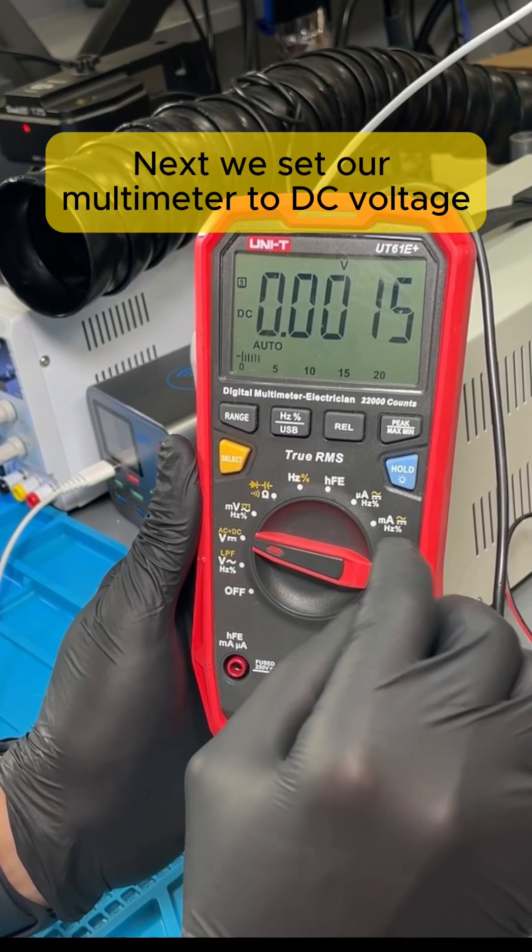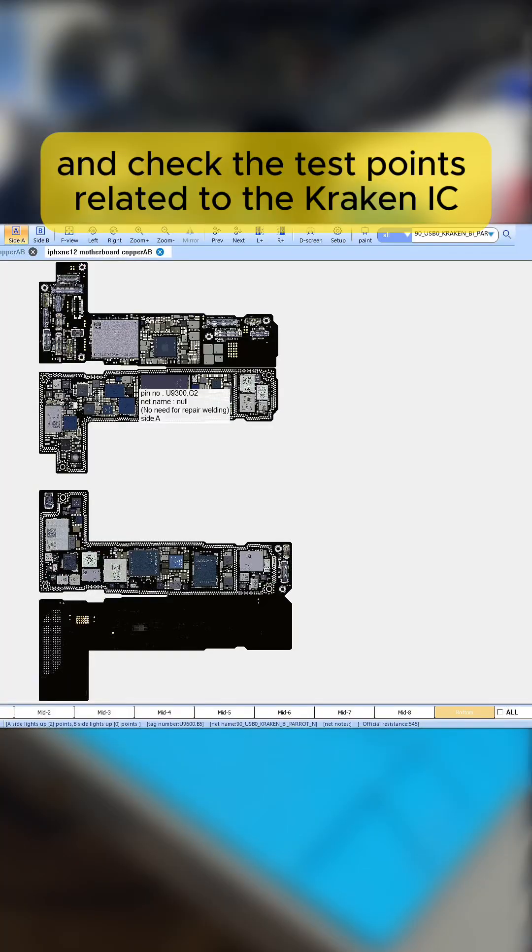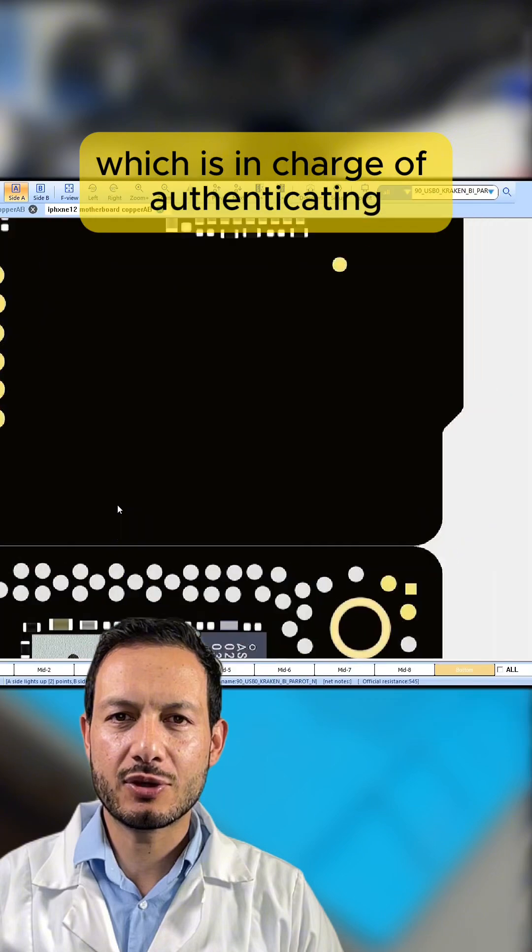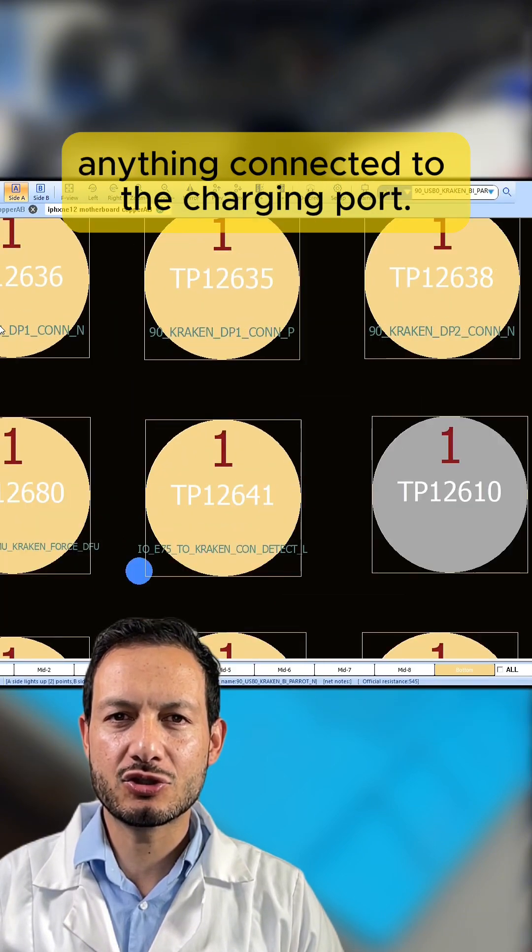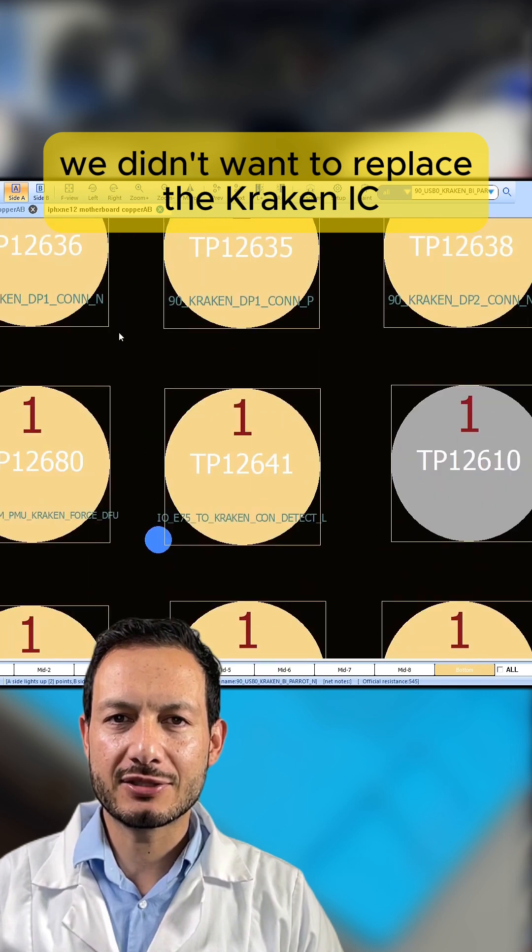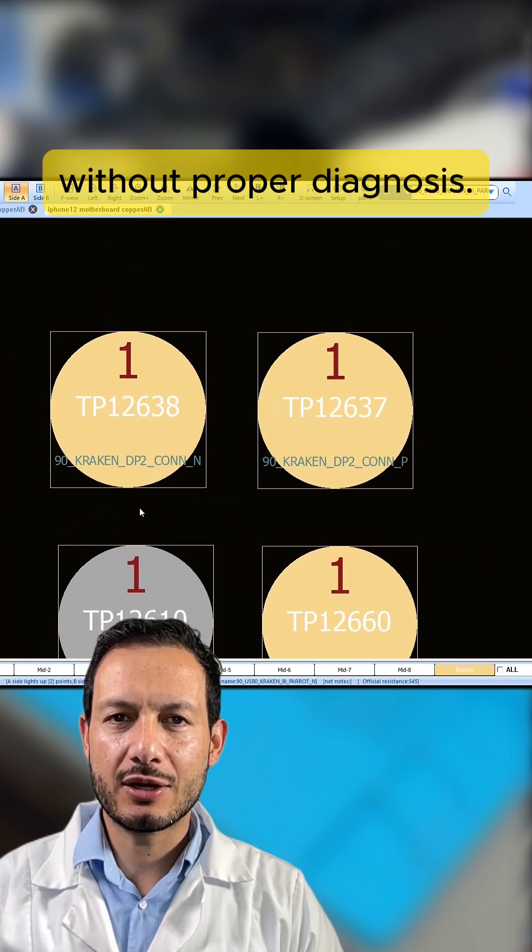Next, we set our multimeter to DC voltage and check the test points related to the Kraken IC, which is in charge of authenticating anything connected to the charging port. Since the phone was charging, we didn't want to replace the Kraken IC without proper diagnosis.